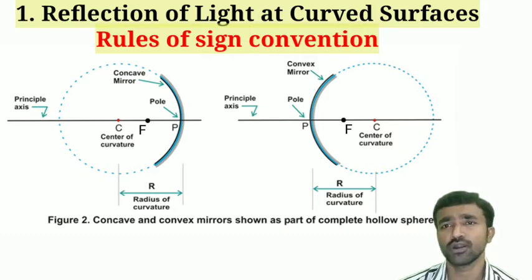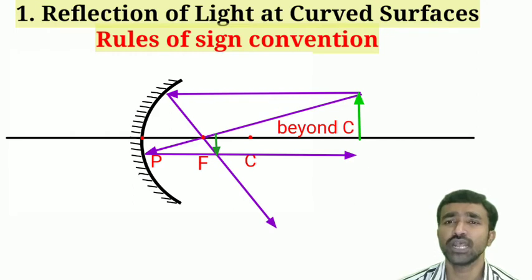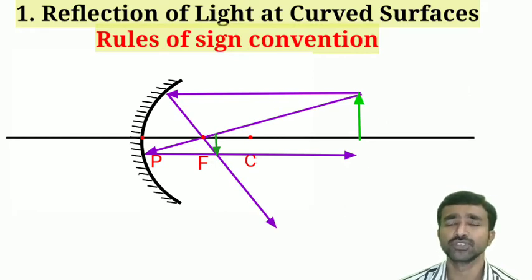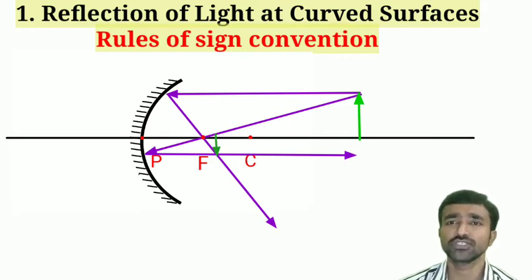These are the parameters we measure while explaining the characteristics of image in ray diagrams or while solving problems. I will take one example: an object placed beyond the center of curvature in front of a concave mirror. The object is always placed above the principal axis; depending on the situation, the image may be virtual or real.